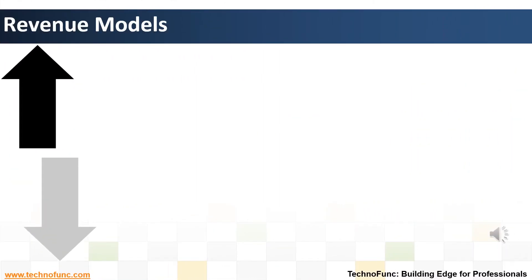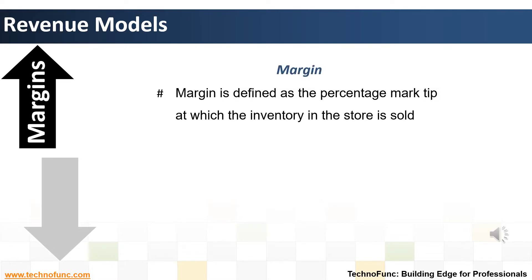Successful retail operations depend largely on two main dimensions: margin and turnover. How far a retail enterprise can reach in margin and turnover depends essentially on the type of business and the style and scale of the operations. The turnover also depends upon the professional competence of the enterprise. Margin is defined as the percentage markup at which the inventory in the store is sold, and turnover is the number of times the average inventory is sold in a year.